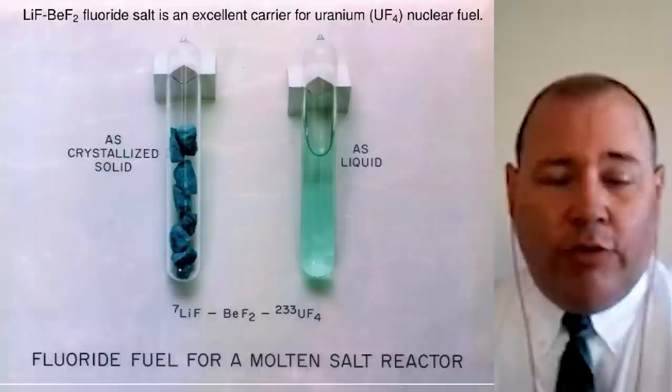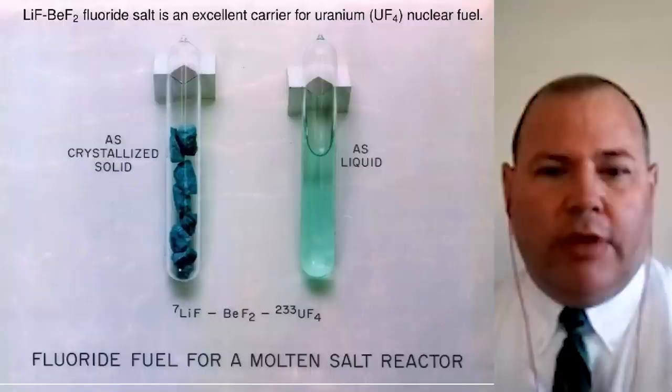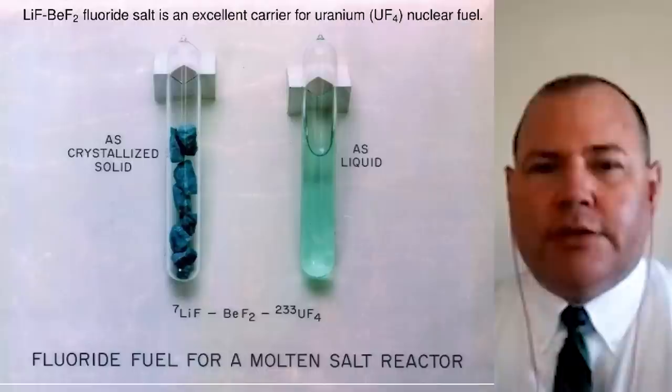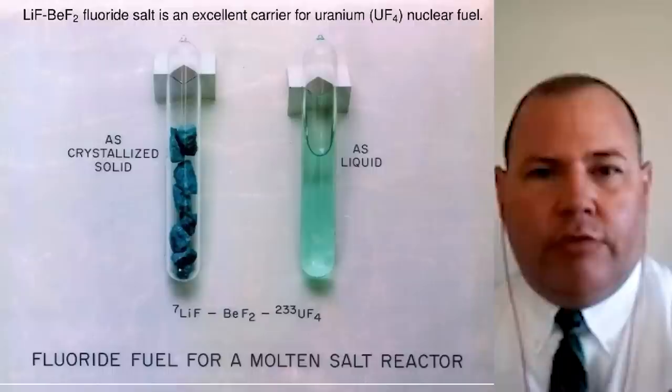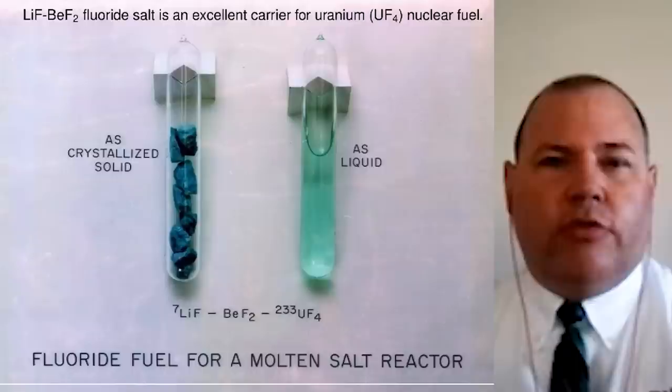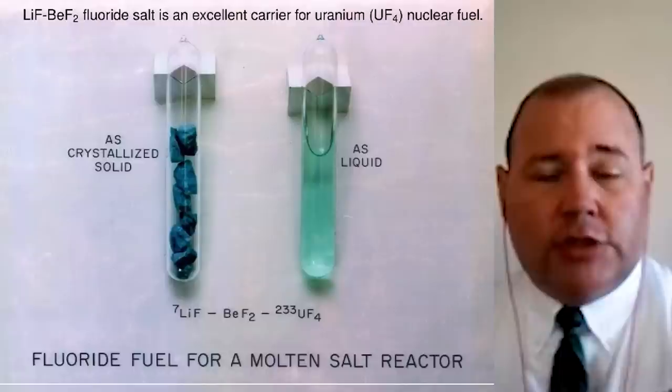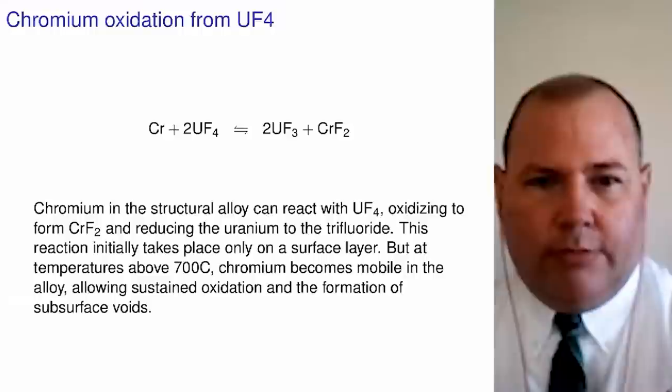You can add nuclear fuel to FLiBe, as was done in the molten salt reactor experiment, and it has good solubility for that. Why do we want to use a molten salt as a fuel? Because we can eliminate an entire step of heat transfer by depositing the energy of fission directly in the coolant, which then carries that energy out of the core to the power conversion system. It's a remarkable simplification, and it also gives the reactor tremendous response against transients and changes in power demand.